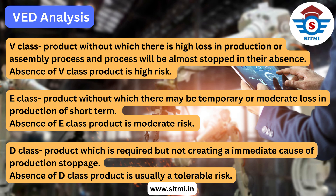D class products are products which are required but do not create any immediate cause of production stoppage. Hence they are referred to as desirable products, and the absence of a D class product is usually a tolerable risk for businesses. Now let's look at examples of V, E, and D class.